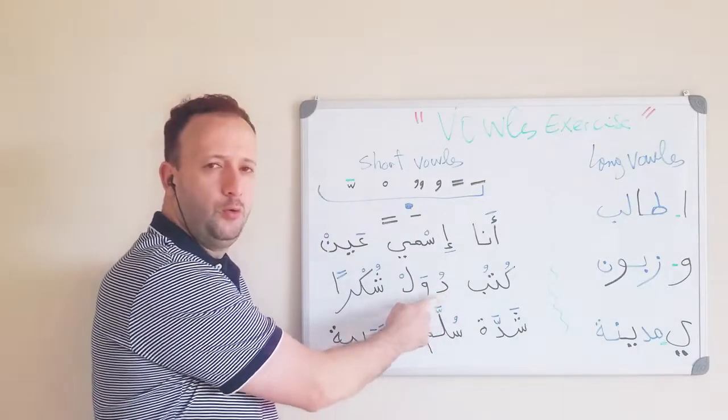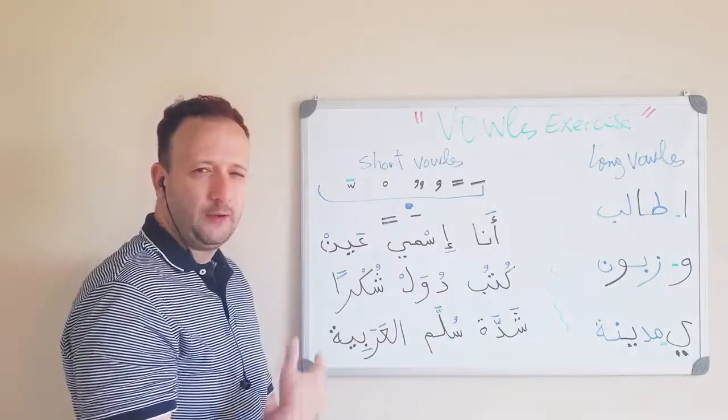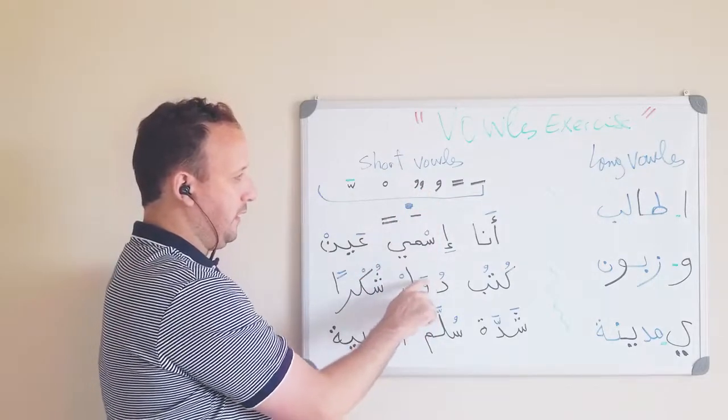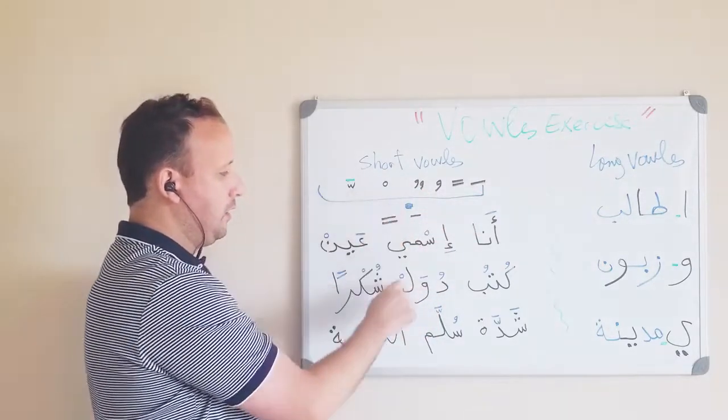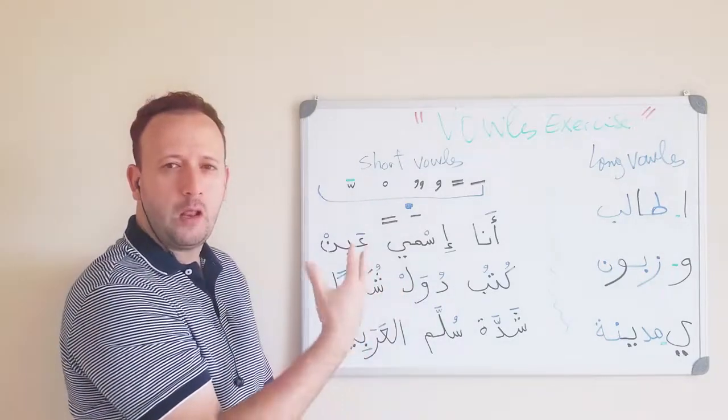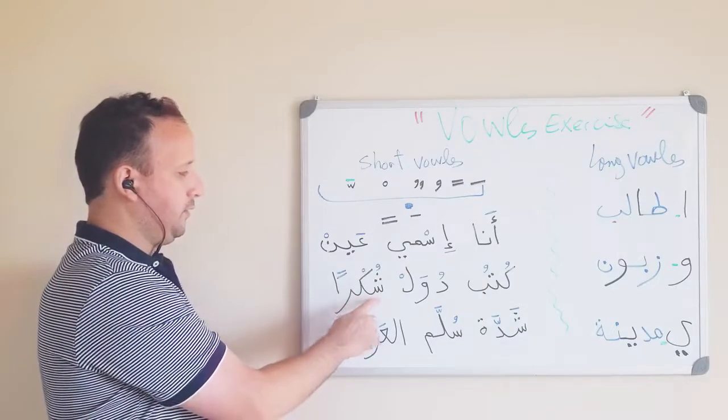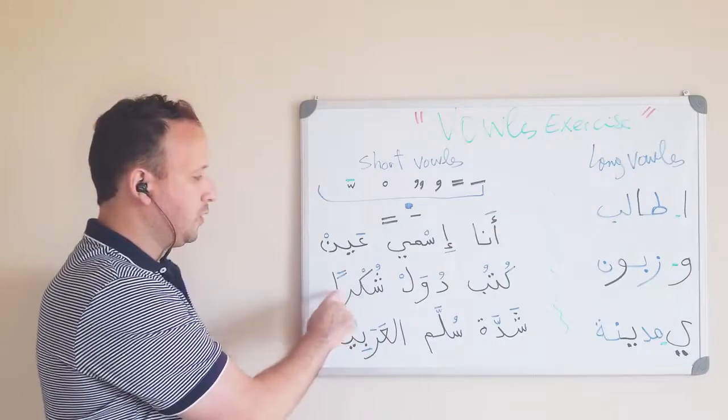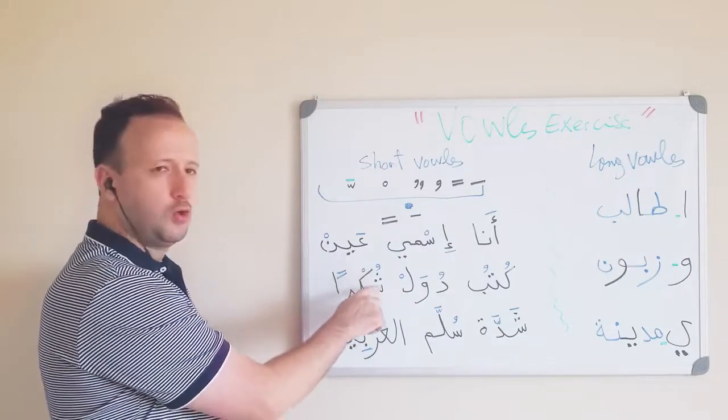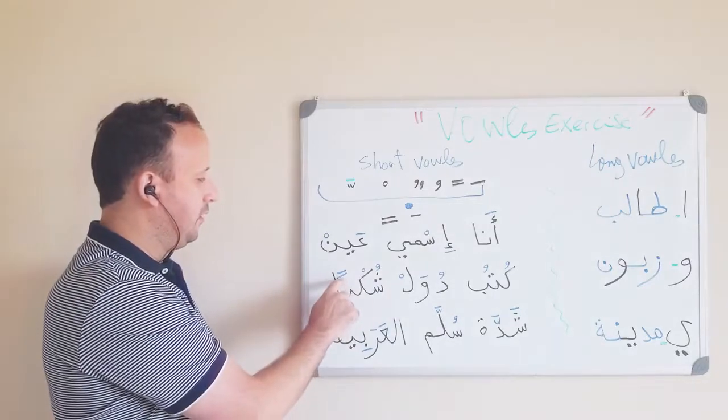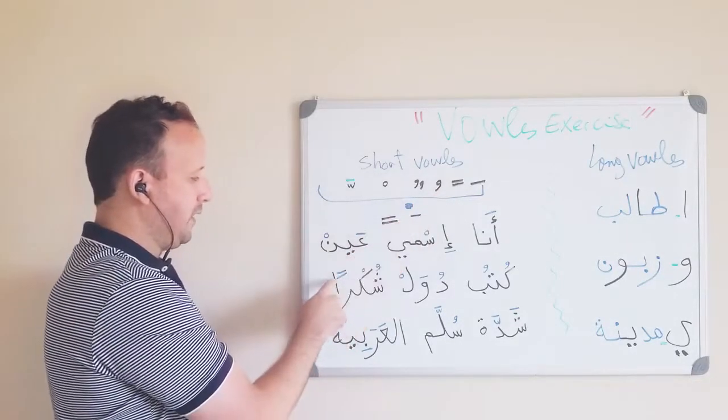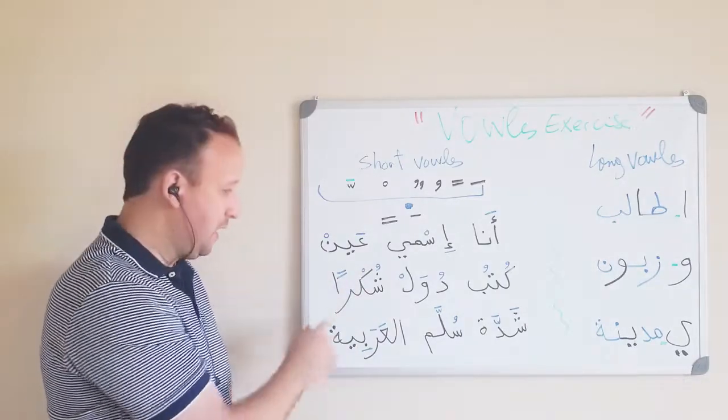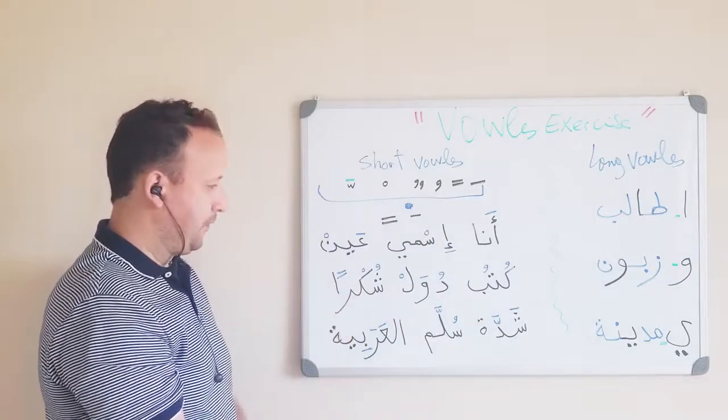This word, duwal. Duwal, countries. So we have duwal. So it's duh. This is fatha. Duwal. So the tanween, the double. So you're going to hear like N here. Shukran. There's no N but you hear it. Shukran, thank you.